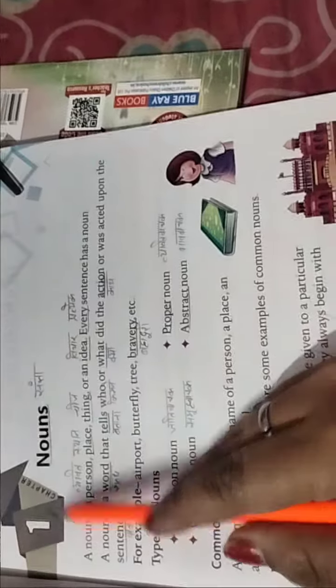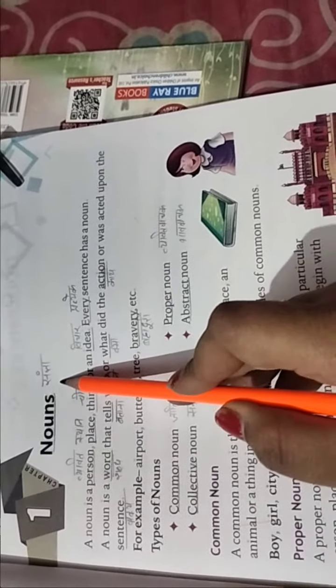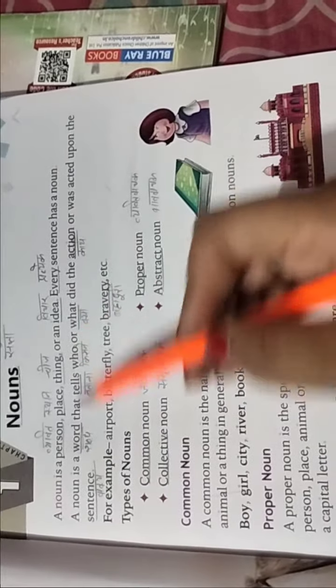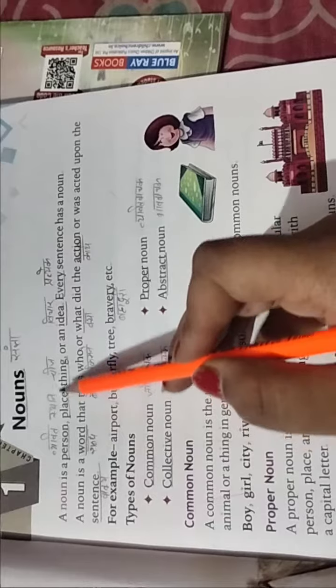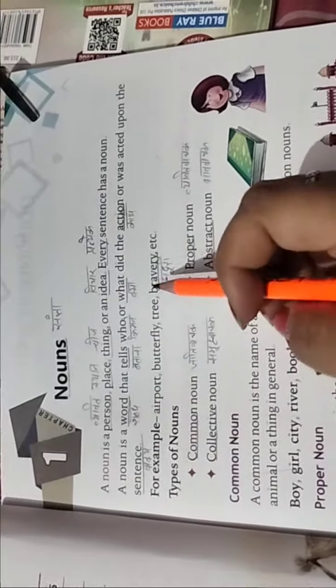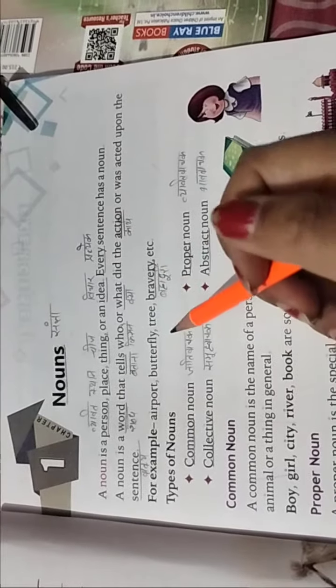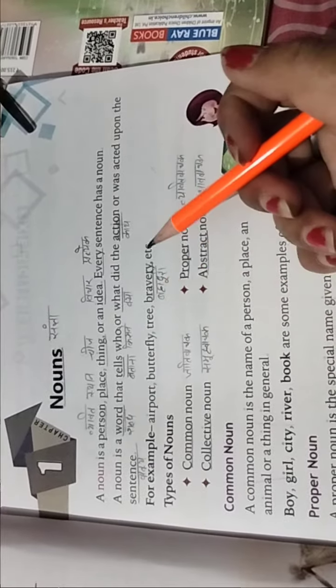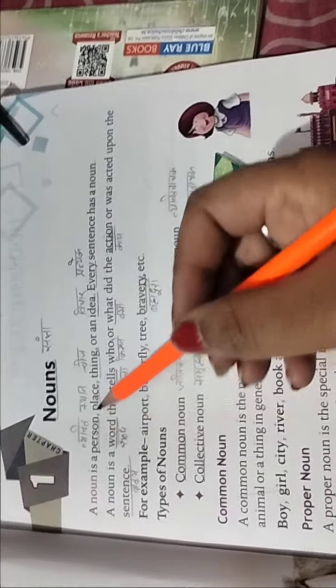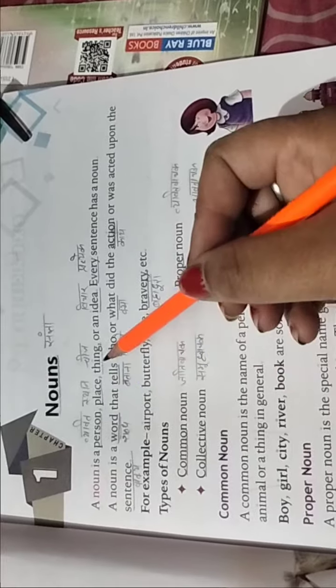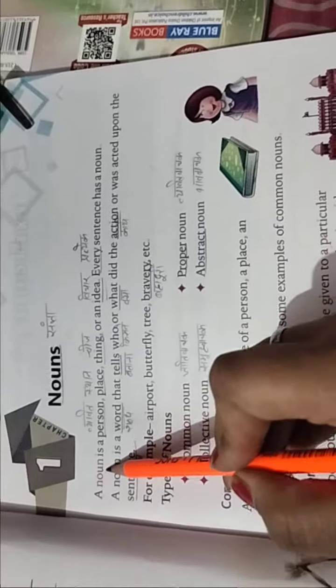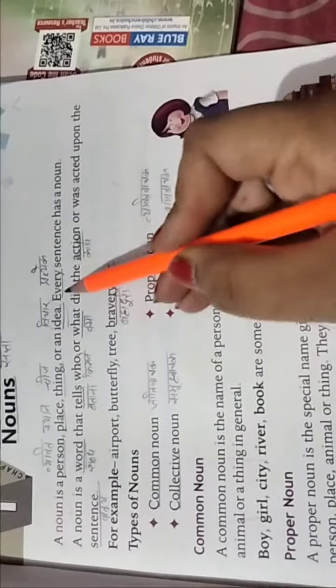Here is our chapter. Chapter 1, Nouns. A noun is a person, place, thing or an idea.